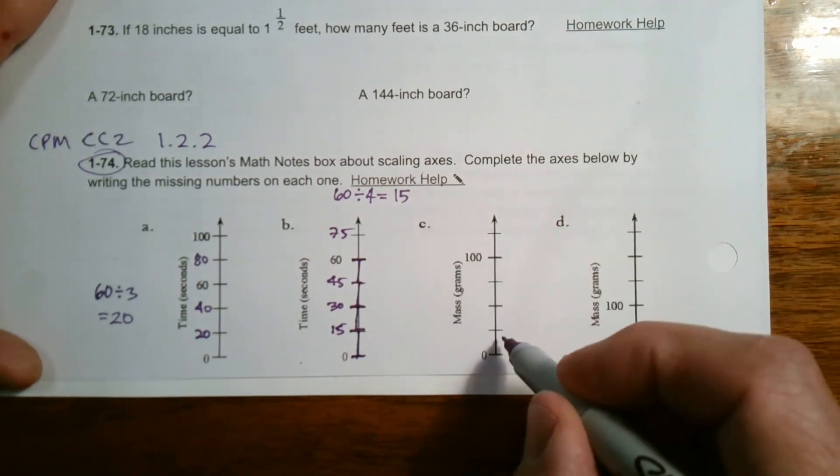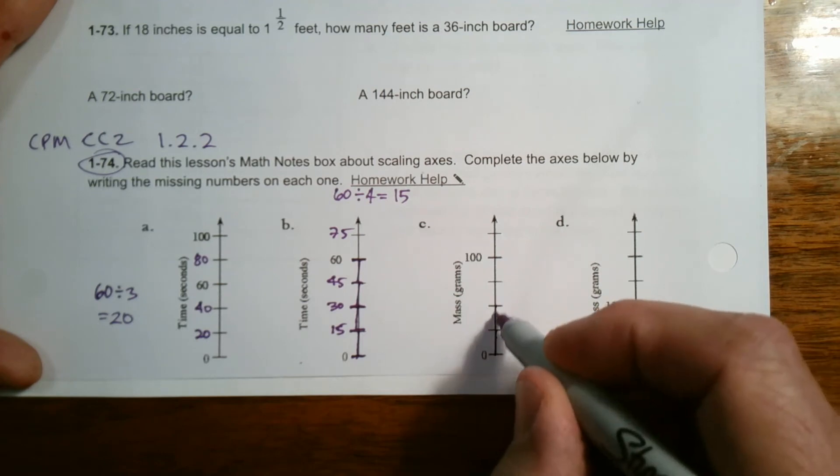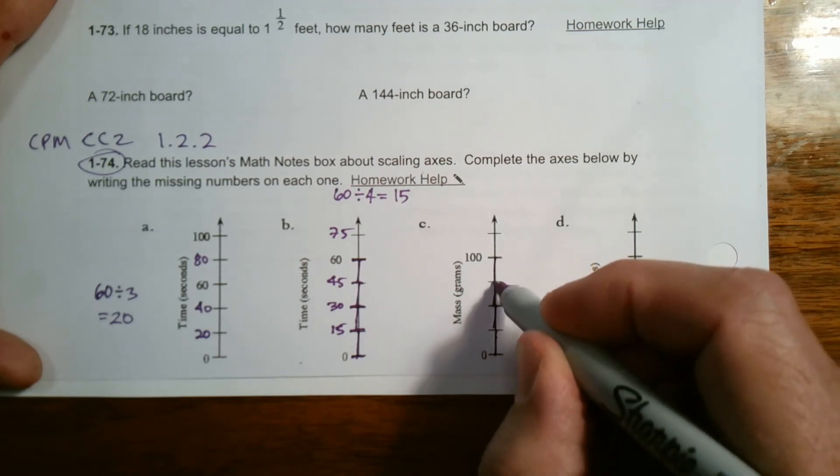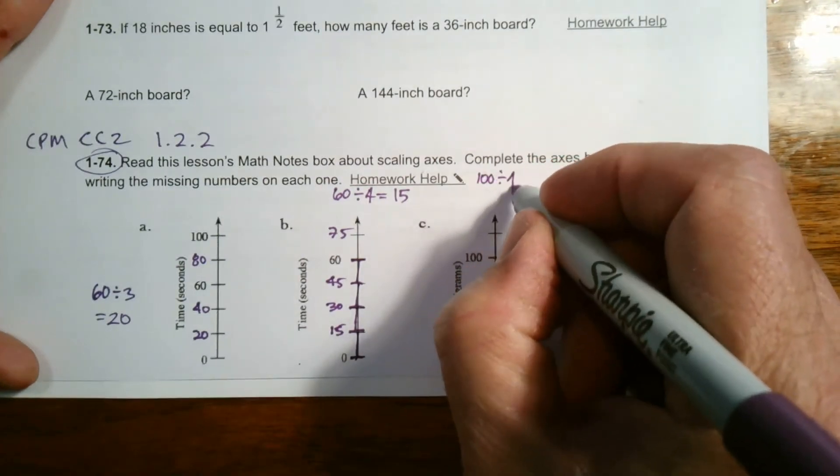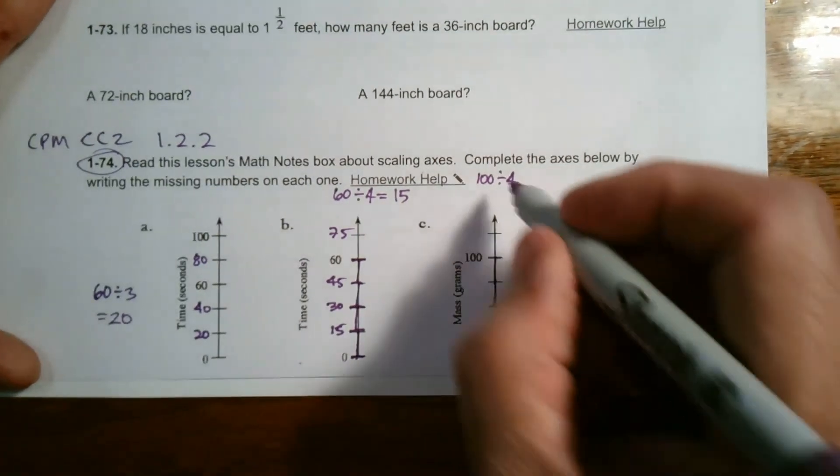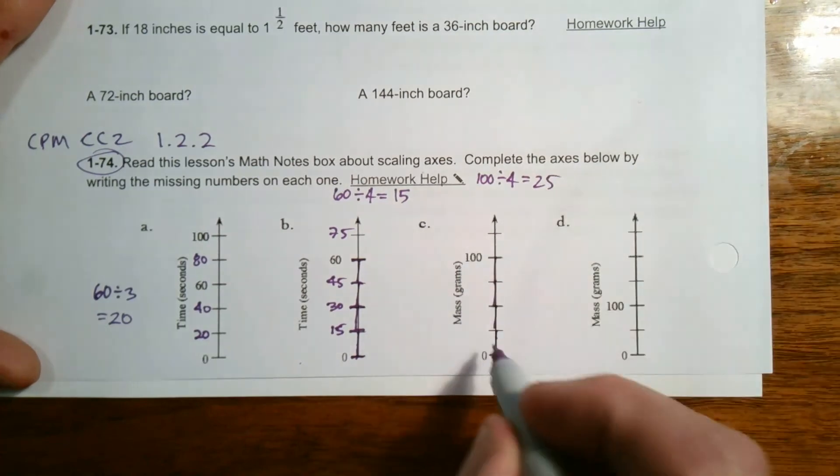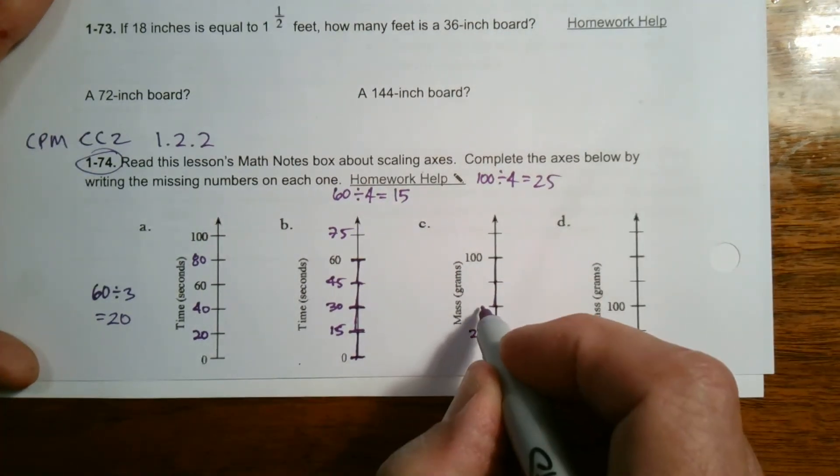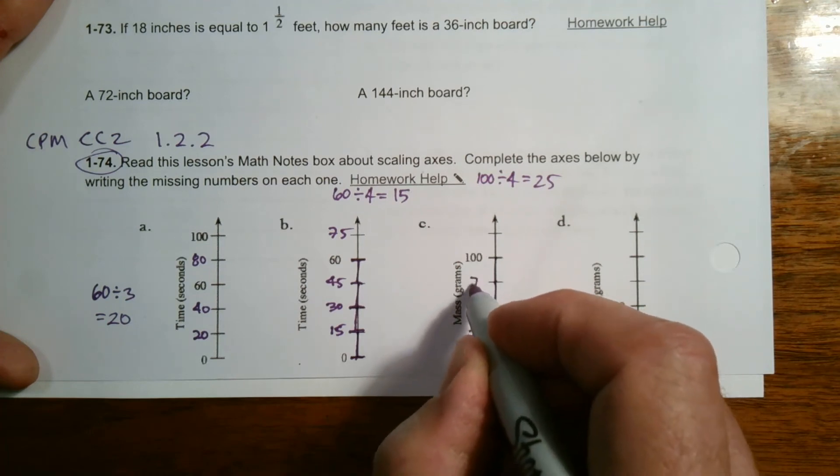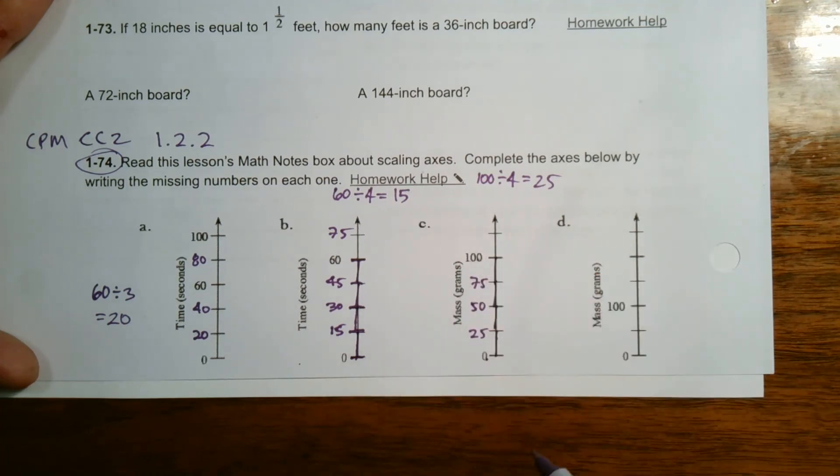Now zero to 100 this time, and there's one, two, three, four spaces between zero and 100. So I take 100 and I divide by four. 100 divided by 4 is 25. So that means each of these, zero to here is 25. 25 more makes it 50, plus 25 makes it 75, plus 25 I'm at 100.